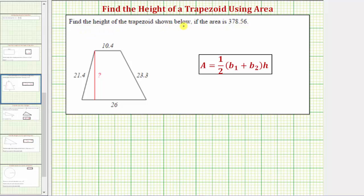Find the height of the trapezoid shown below if the area equals 378.56 square units. The area formula for a trapezoid is area equals one-half times the quantity b sub one plus b sub two times h, where b sub one and b sub two are the lengths of the two bases.